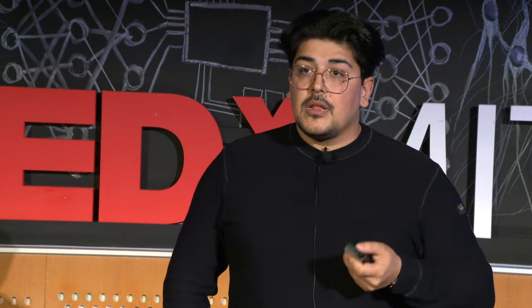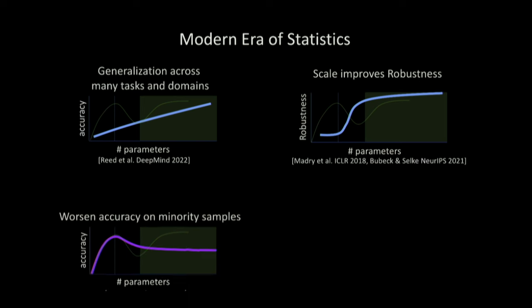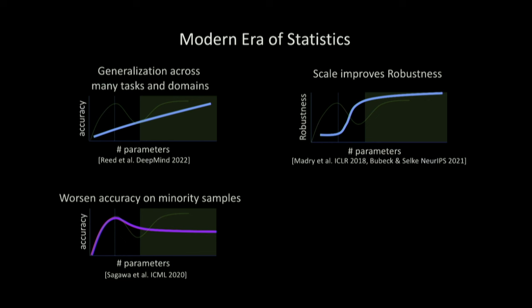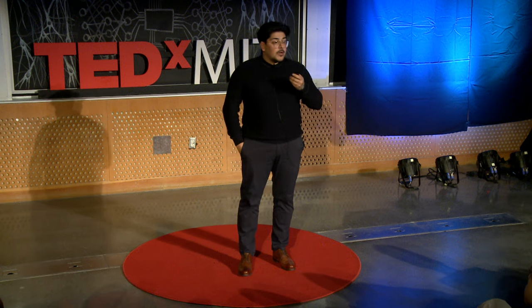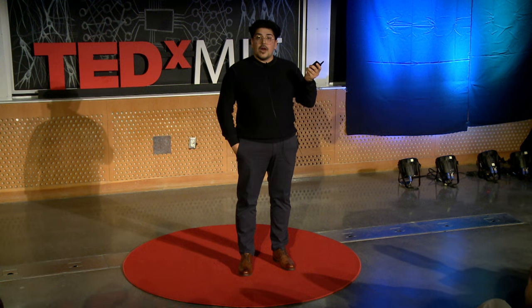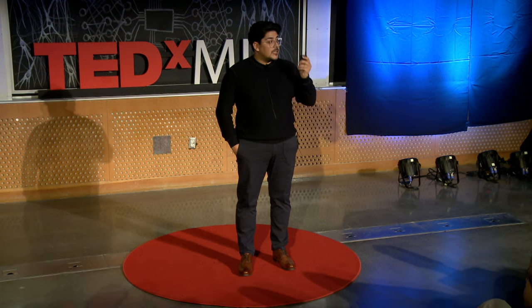Not everything improves with scale. On underrepresented samples, after the first bump there is a decrease in performance on minority samples with large AI models in general. Reasoning — the ability to find logic from a given task — also stays the same; it doesn't change as we scale these systems, unless you provide the system with a physical simulator. As an intelligent being, if you close your eyes, you can still imagine a bouncing ball, because you have that intuitive physics engine in your head. If you provide this kind of simulation engine to AI, it would actually be able to improve on reasoning.